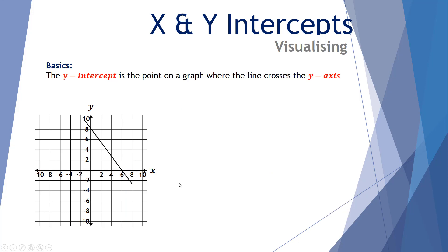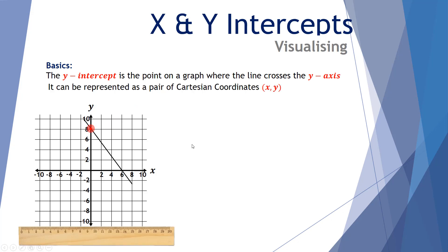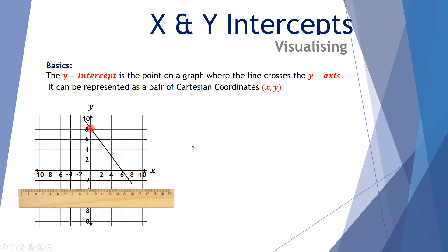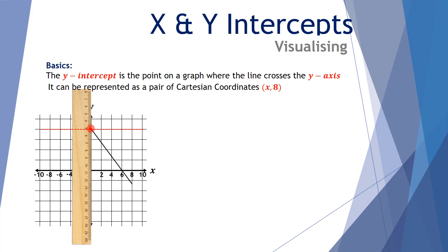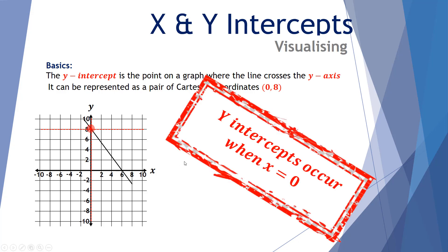The y-intercept is the point on the graph where the line crosses the y-axis. So here's our y-axis and here's our y-intercept, right at this point here. It can be represented as a pair of Cartesian coordinates as well — we have a y value of 8 and an x value of 0. It doesn't matter where it crosses the y-axis, this x value is always going to be 0. Y-intercepts occur when x equals 0.